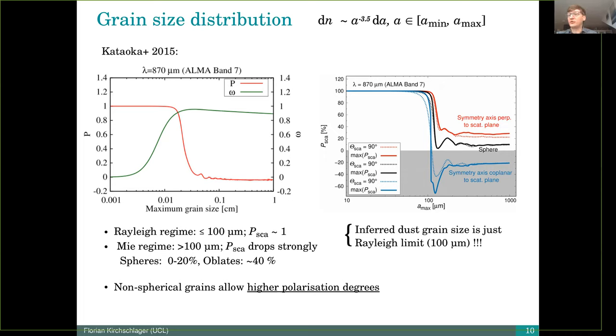Depending on the scattering plane, we get polarization values which are 20% above or below that of the spherical grains. And the negative sign for the scattering plane means again that we have here just a rotation of our polarization direction. So what we can see is that the non-spherical grains allow higher polarization degrees.